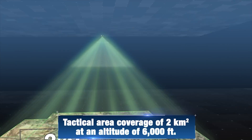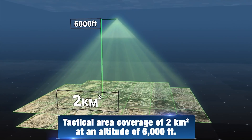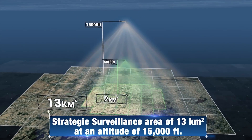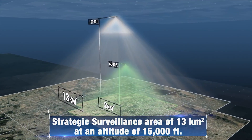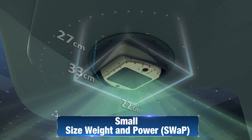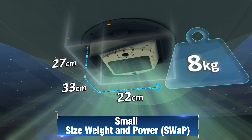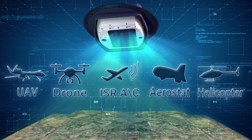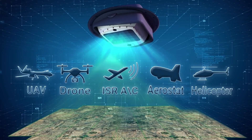A tactical altitude of 6,000 feet will provide a 2 square kilometer surveillance area. IAI's WASP offers a unique small SWaP — size, weight, and power — allowing easy installation on board a wide range of platforms in addition to existing payloads.